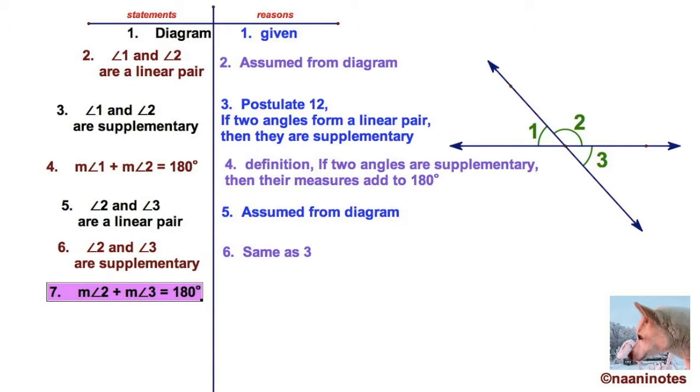Line seven: the measure of angle 2 and 3 is 180. That sounds like a definition. If two angles are supplementary, their measures add to 180. Now let's do something interesting.